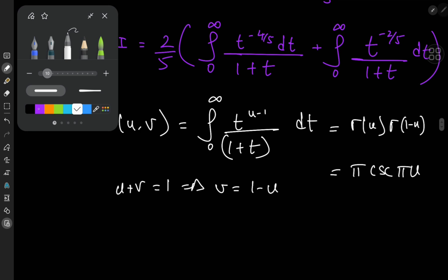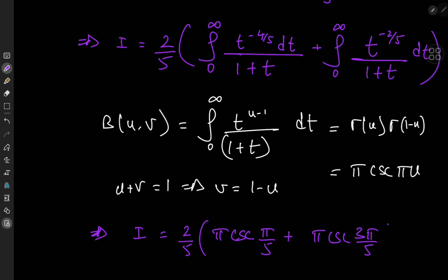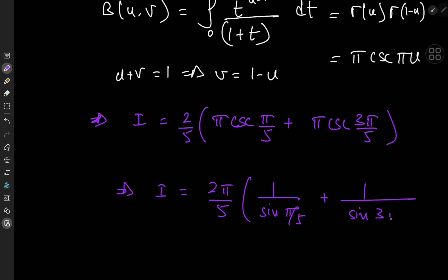For the first integral, u minus 1 equals negative four-fifths, so u equals one-fifth, giving π times cosecant(π/5). For the second integral, u equals three-fifths, giving π times cosecant(3π/5). Factoring out the common term of π and the one-fifth prefactor, I equals 2π/5 times the reciprocal of sin(π/5) plus the reciprocal of sin(3π/5).